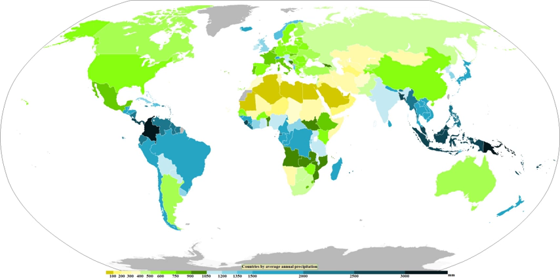Climate classification systems such as the Köppen climate classification system use average annual rainfall to help differentiate between differing climate regimes. Precipitation may occur on other celestial bodies; for example, when it gets cold, Mars has precipitation which most likely takes the form of frost, rather than rain or snow.